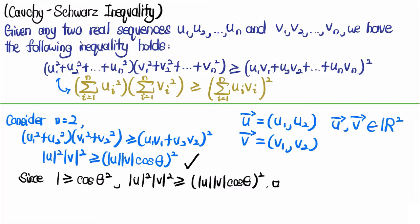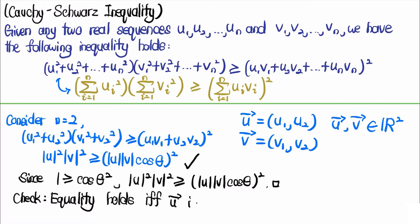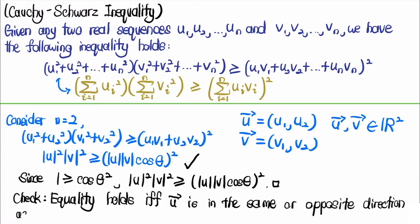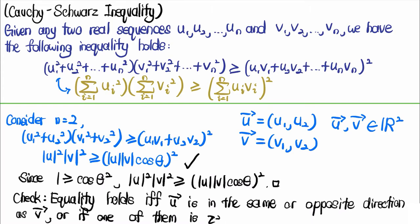We should also check when equality holds. Equality holds if and only if vector u is in the same or opposite direction as vector v, or if one of them is the zero vector.